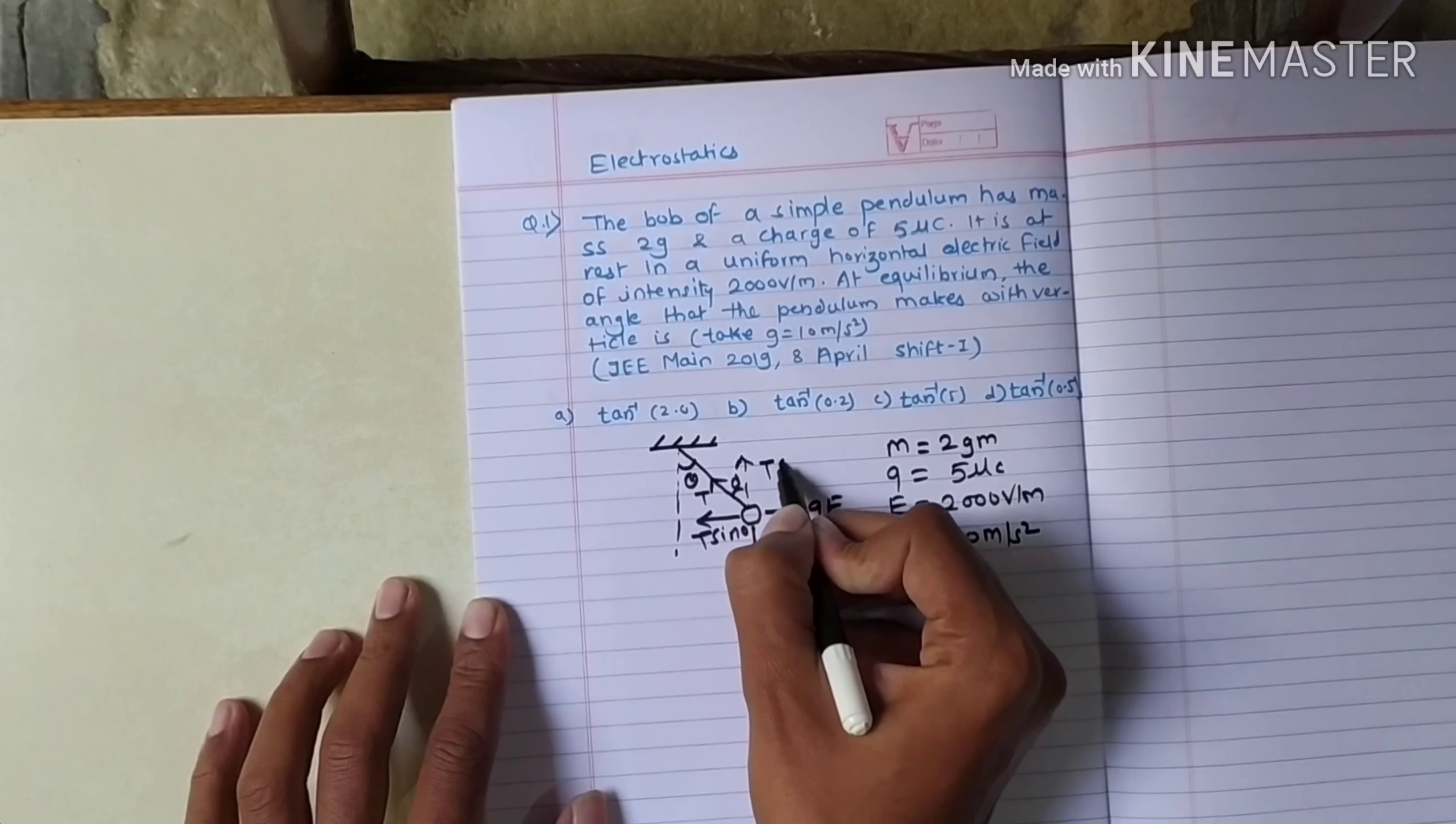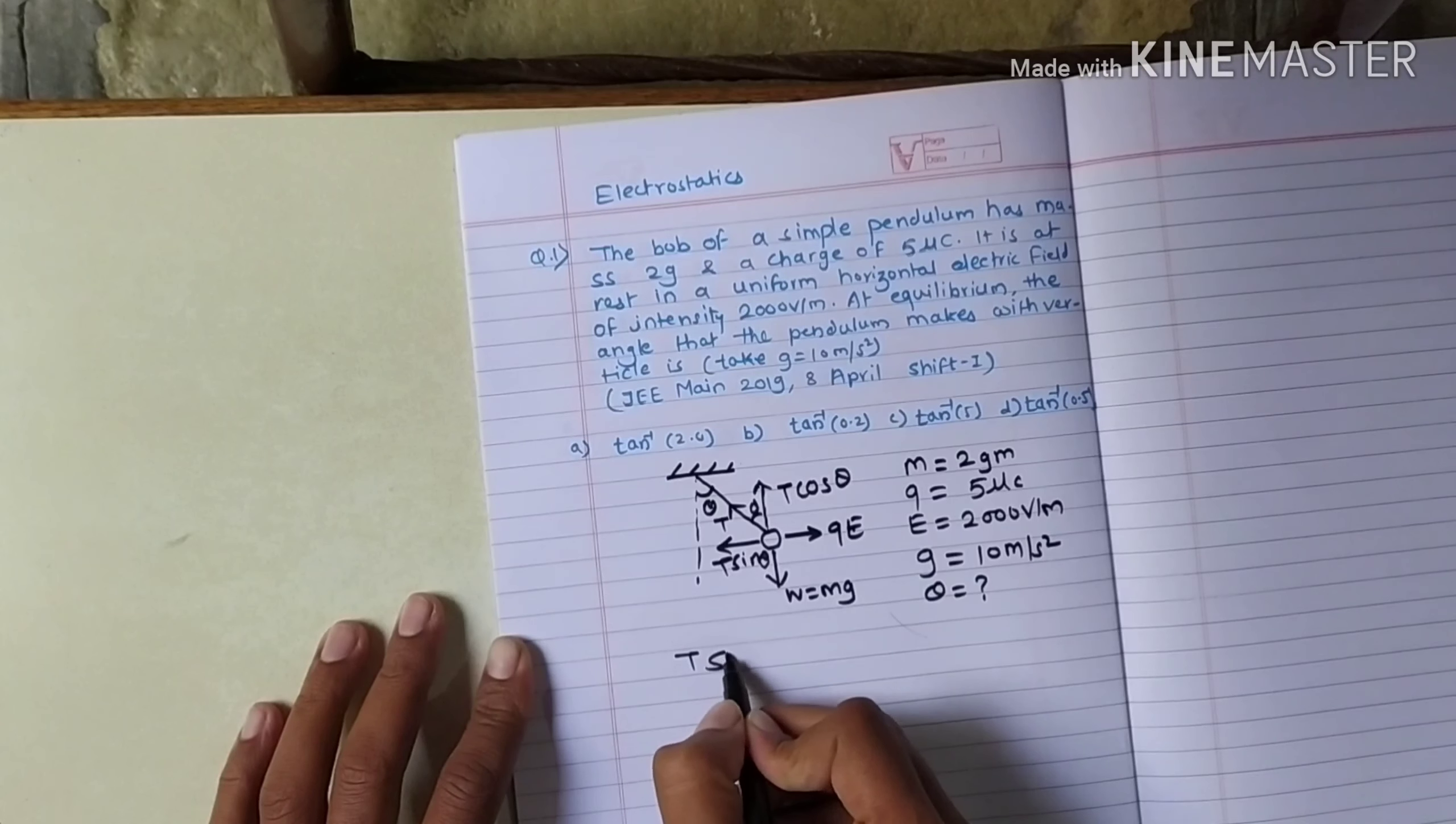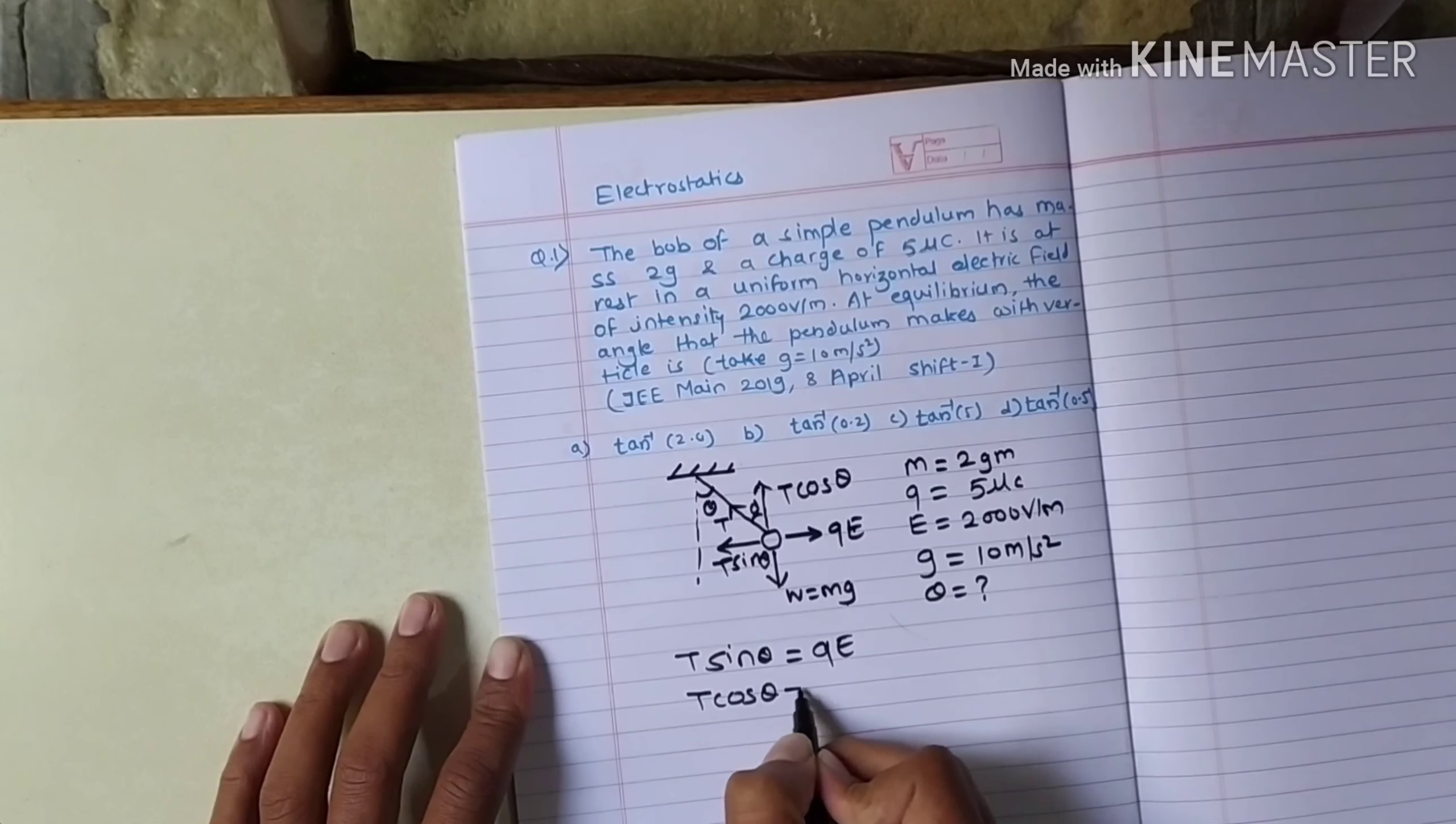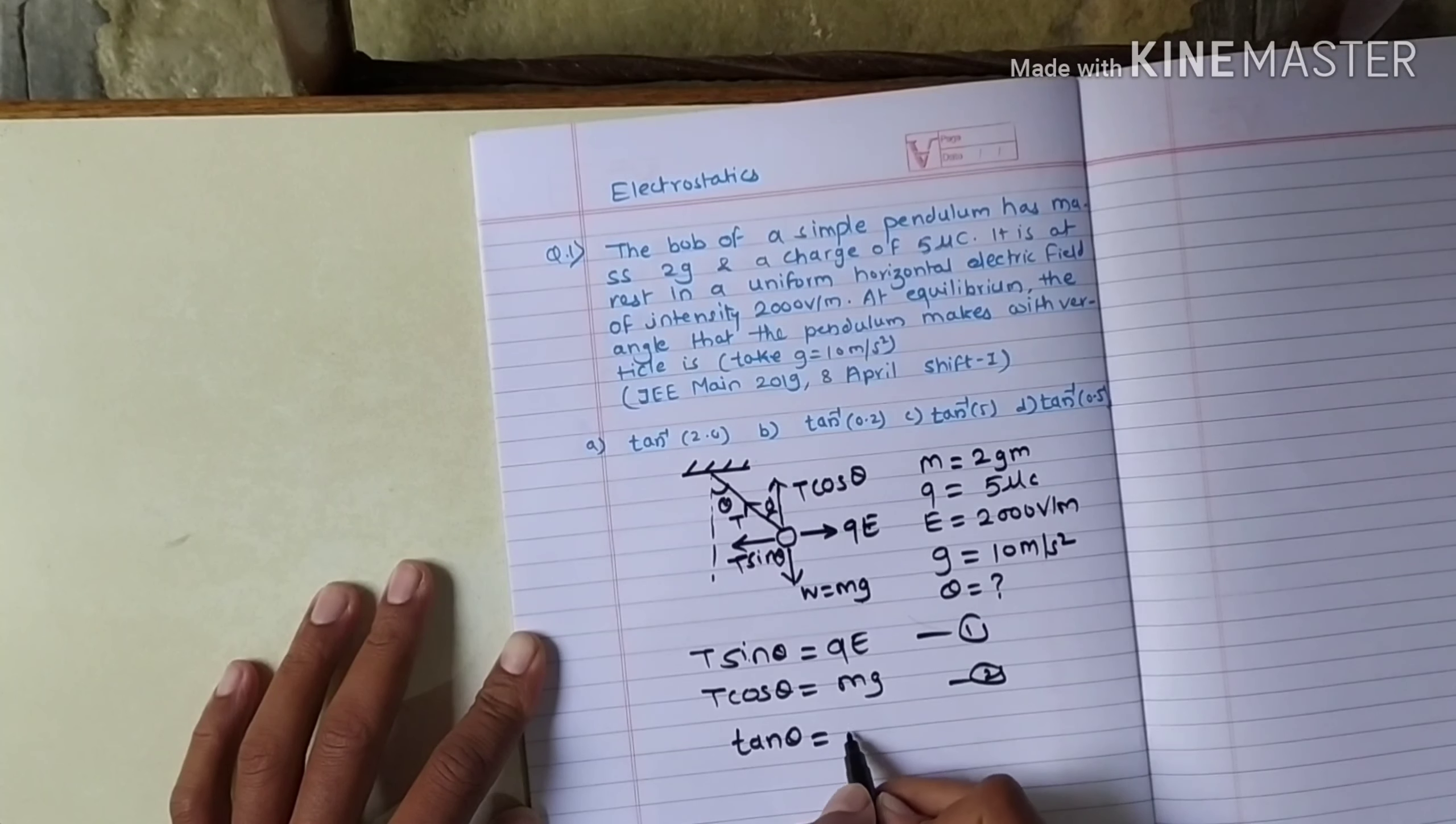If this force is balanced by qe, then T sin theta is balanced by qe. So we can write T sin theta is equal to electrostatic force qe. And T cos theta is balanced by this weight. So T cos theta will be equal to weight mg. These are the two equations. If we divide these two equations by one another, then T will get cancelled. So sin theta upon cos theta will be equal to tan theta, and that is equal to qe upon mg.